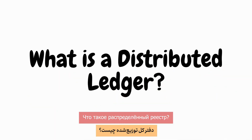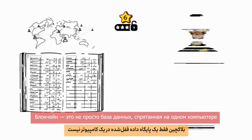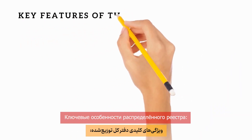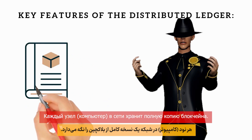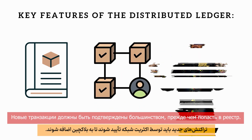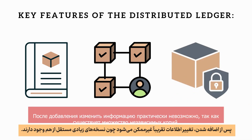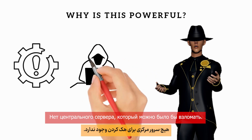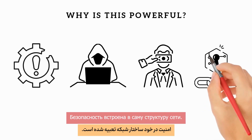What is a distributed ledger? Blockchain isn't just a database locked away on one computer — it's a distributed ledger spread across thousands of devices around the world. Every node, or computer, in the network holds a complete copy of the blockchain. New transactions must be validated and agreed upon by the majority before being added. Once added, the information is almost impossible to change because so many independent copies exist. There's no single point of failure, no central server to hack, no administrator to bribe — security is built into the very structure of the network itself.